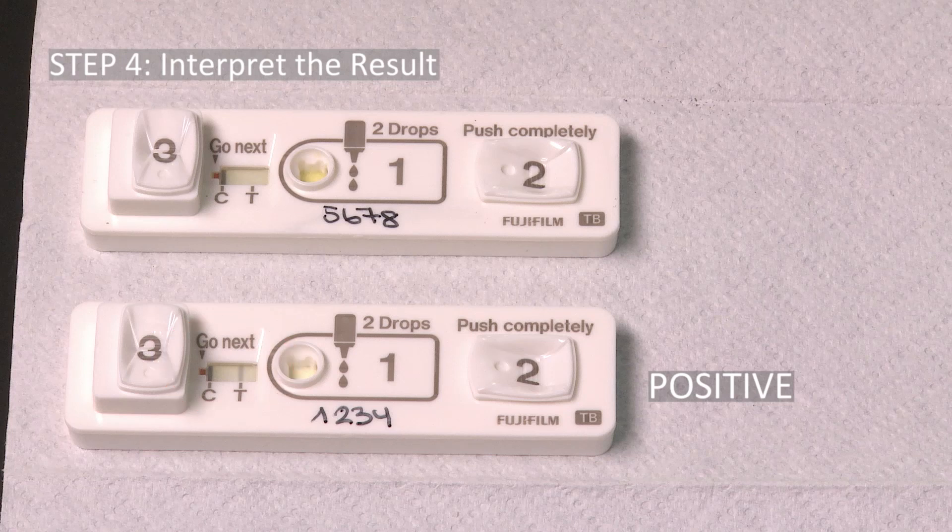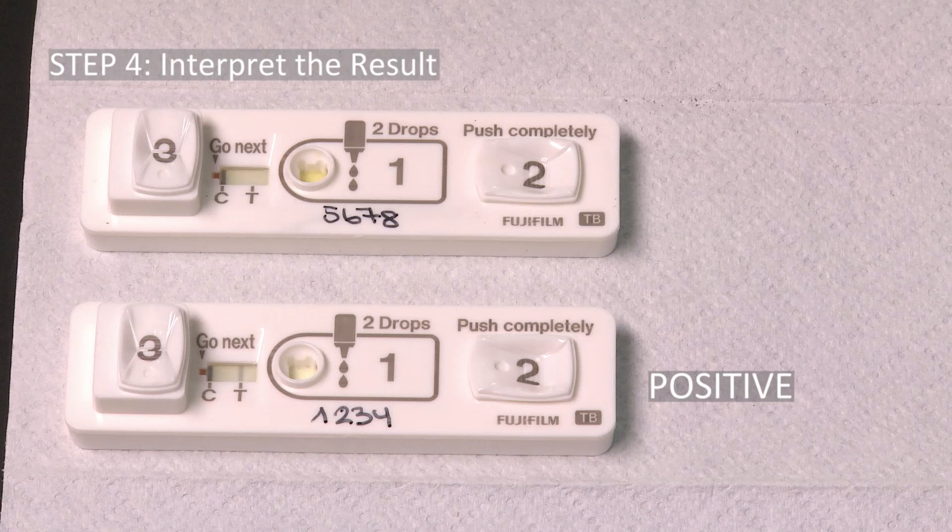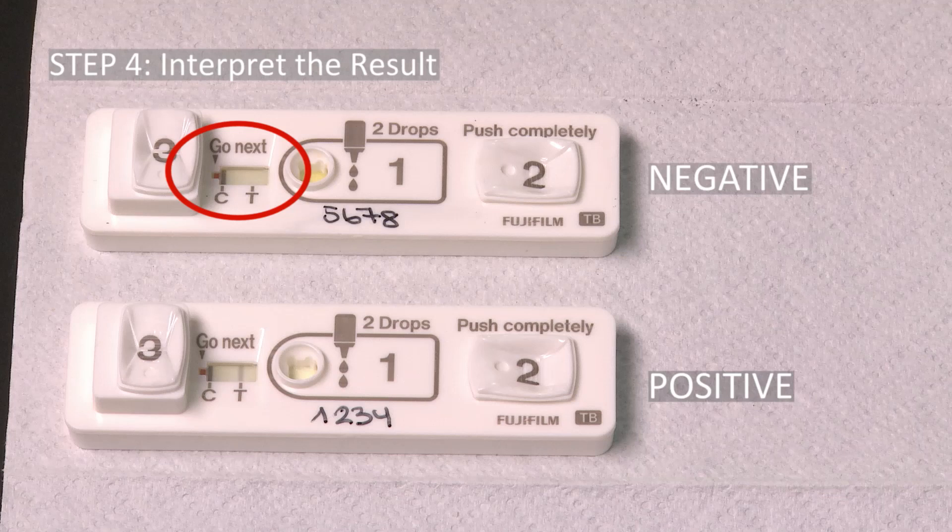Any line seen on the test line position, even if the line is faint, should be interpreted as positive. The test is negative if a test line is absent and only a control line appears.